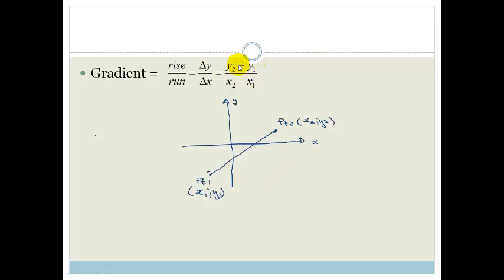Then the gradient is basically going to be given by the rise divided by the run, or the change in y over the change in x. Or mathematically, what that means is that we're going to take this y2 minus y1, which is going to give me my delta y, divided by x2 minus x1, which is going to give me my change in x.